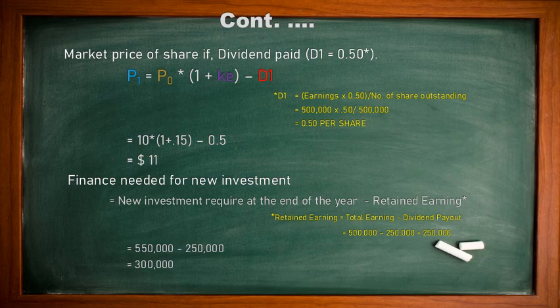We put the value in our formula and get the market price of the share as $11. Now it is important to know how much financing is required. New investment required minus retained earning, where retained earning equals total earning minus dividend paid. Total earning is $500,000; 50% is paid as dividend, which is $250,000. Retained earning is $500,000 − $250,000 = $250,000. So financing needed from the market is $300,000 — compared to only $50,000 when no dividend was paid.